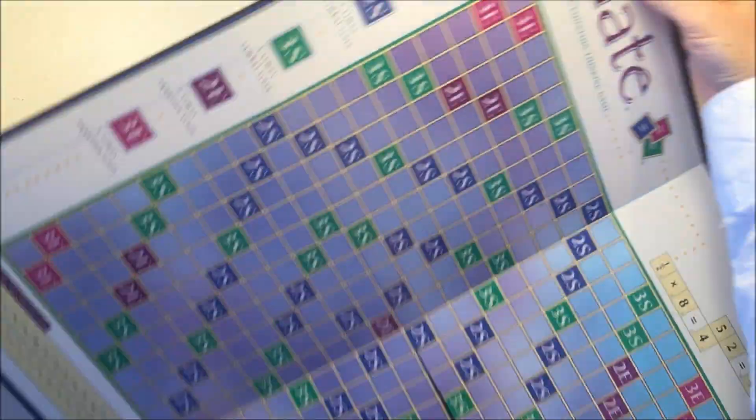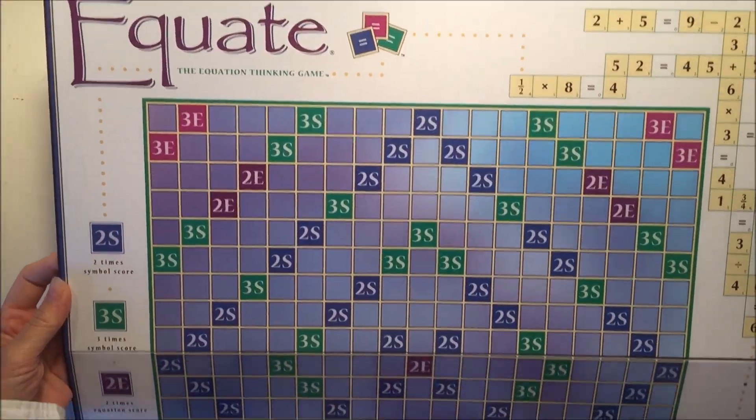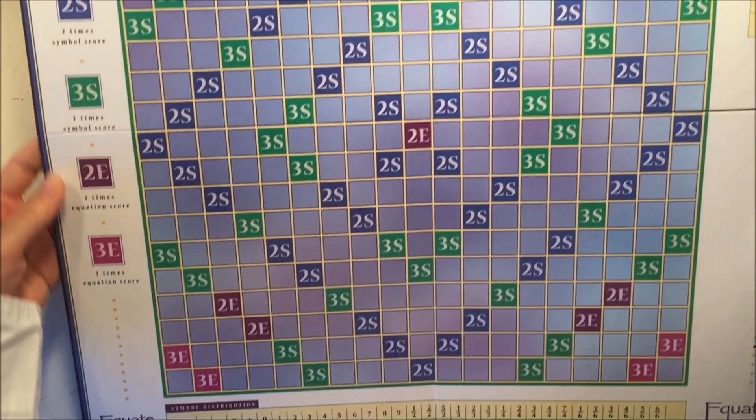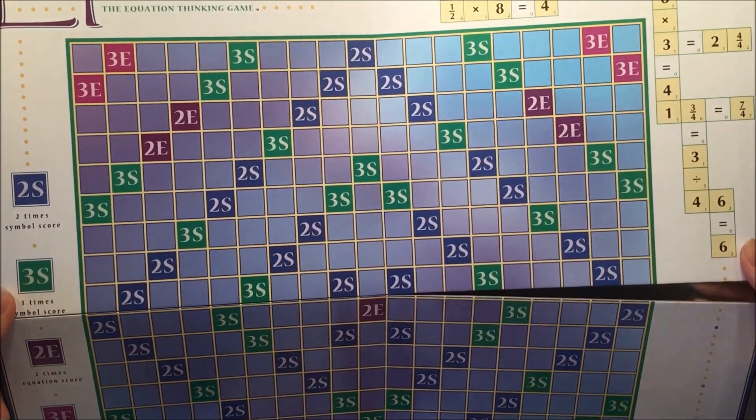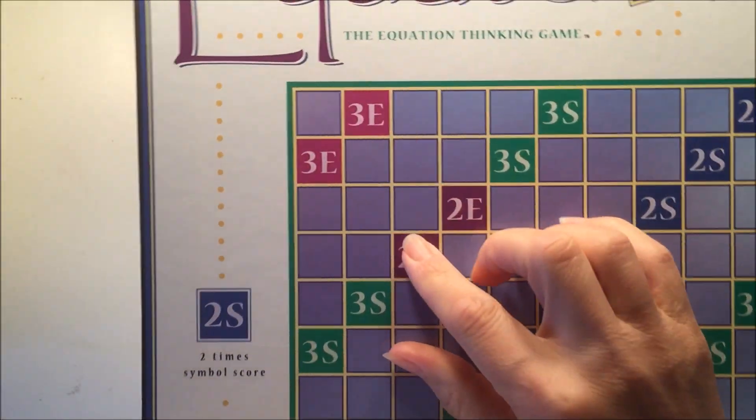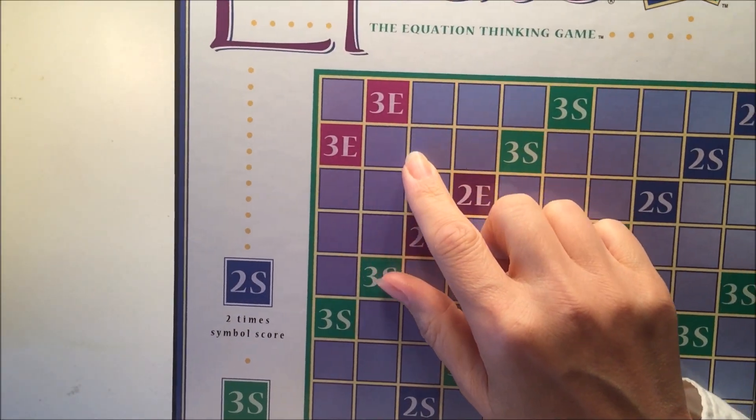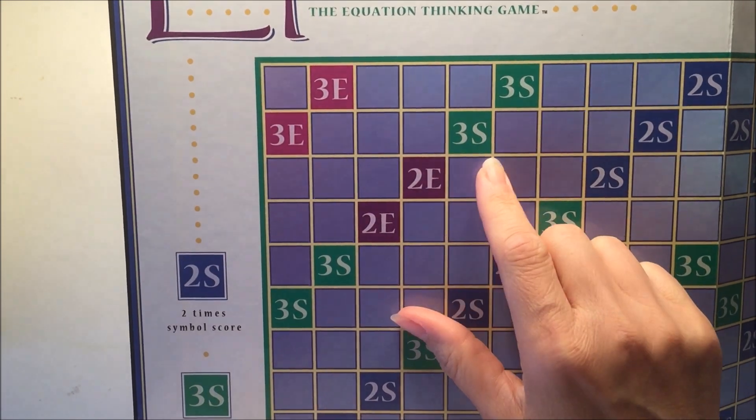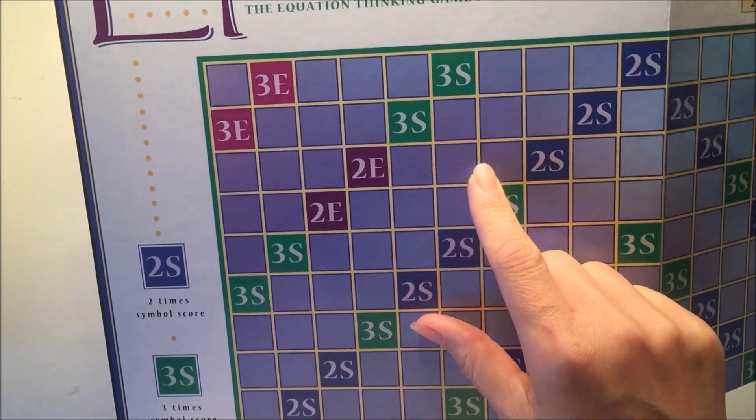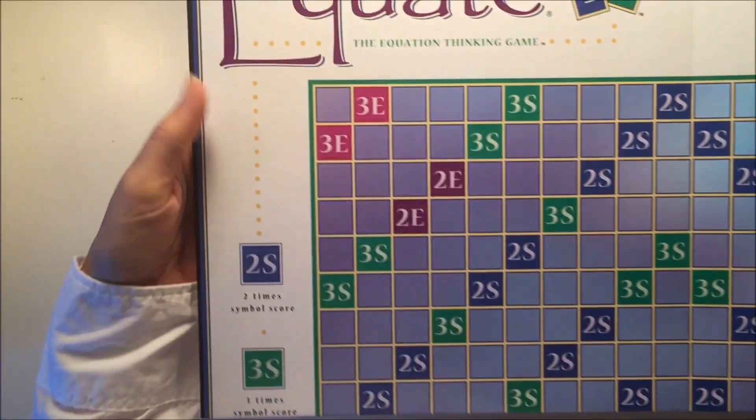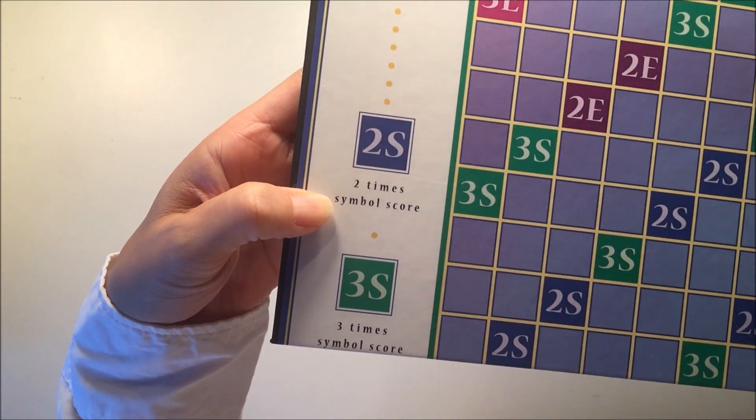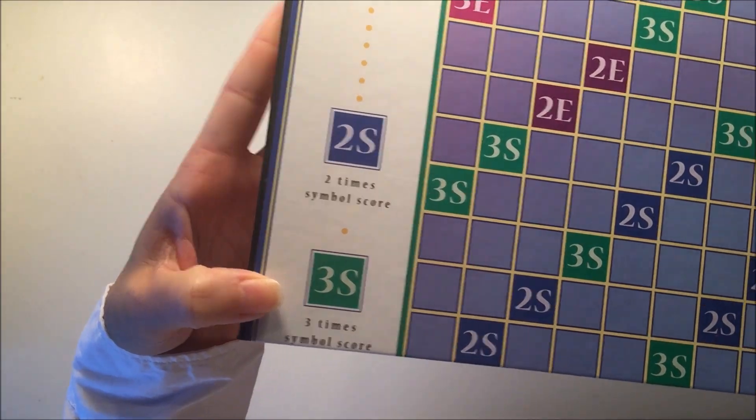You can pick it up from rainbowresources.com and it's played similar to Scrabble in that you have a board in which you place tiles with numbers and you try to build equations. On the board there are little icons that indicate whether your equation score will be doubled or tripled, or whether your symbol score for a particular tile will be doubled or tripled.